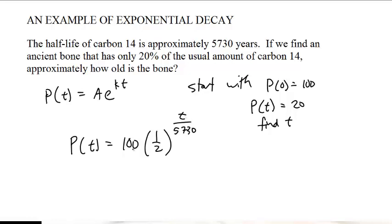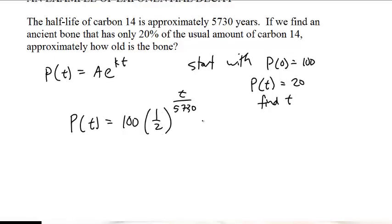When t = 0, we have 100 because anything to the 0 power is 1. When t = 5,730, we multiply by half, so we'll have exactly 50 units. We want to know when this equals 20.